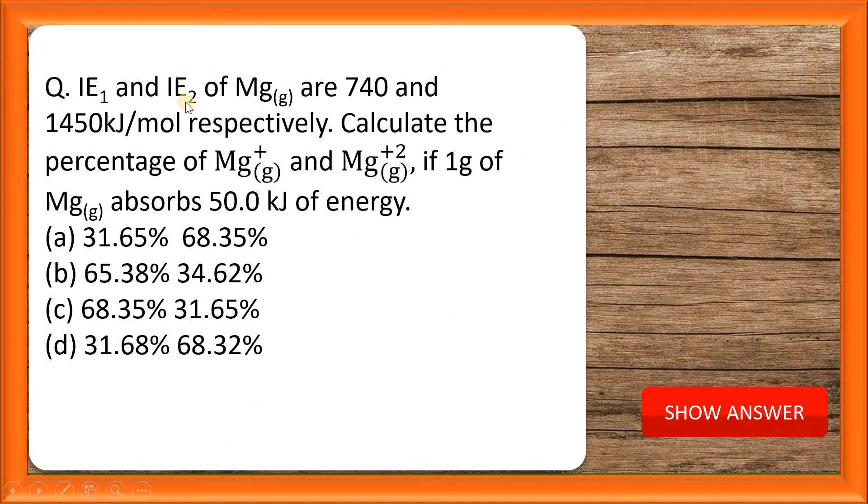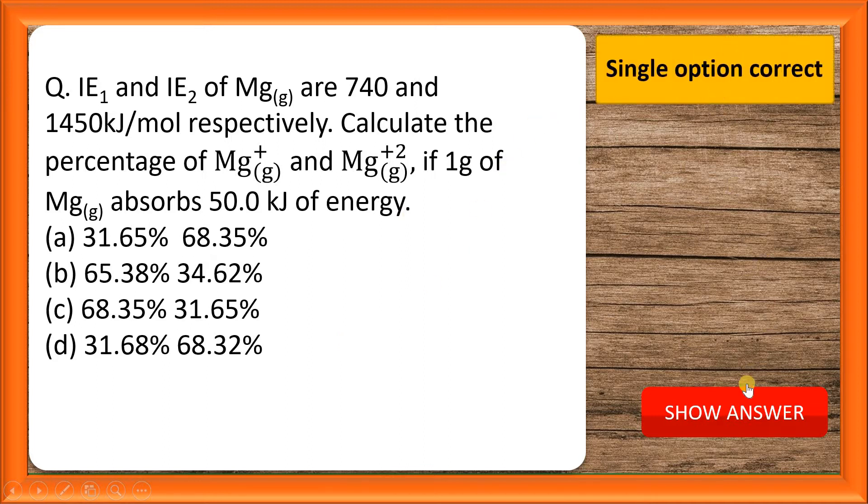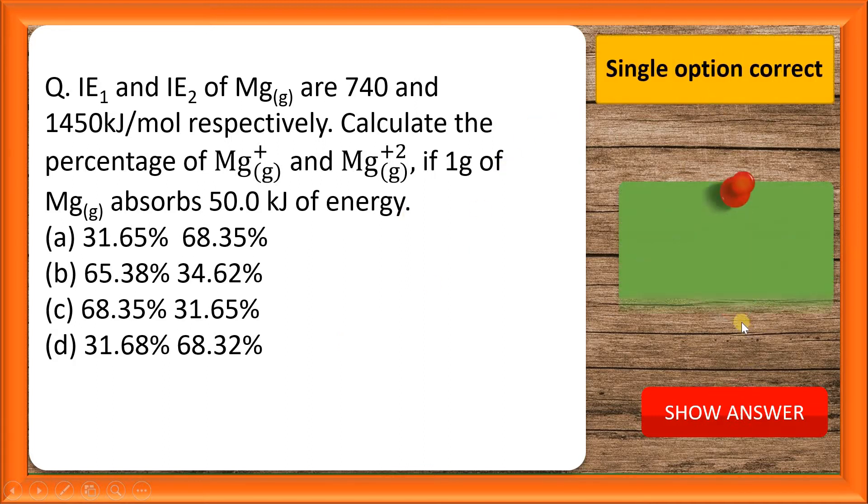First ionization energy and second ionization energy of magnesium in gaseous state are 740 and 1450 kilojoules per mole respectively. Calculate the percentage of Mg⁺ and Mg²⁺ if 1 gram of magnesium absorbs 50 kilojoules of energy in the gaseous state. These are the options students, single option correct category, and the answer is option C.